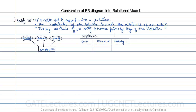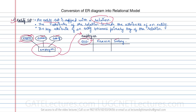Let us see if you have an ER diagram, or entity-relationship diagram, how you can convert it into a relation — and by relation we mean a table. The first step is: an entity set is mapped into a relation. For example, the entity 'Employee' with attributes employee number, employee name, and salary becomes a table. The key attribute of the entity becomes the primary key of that table.